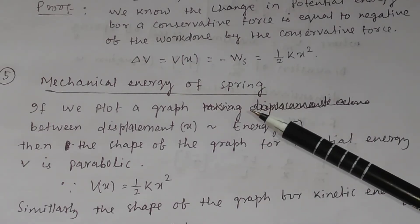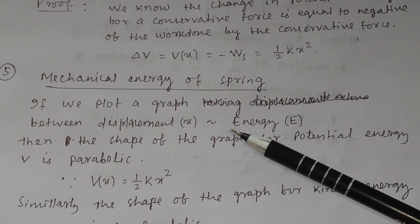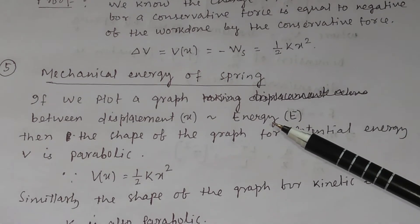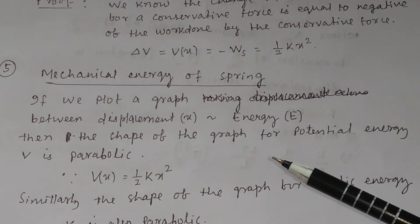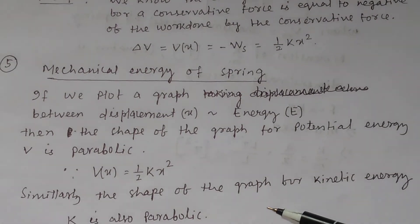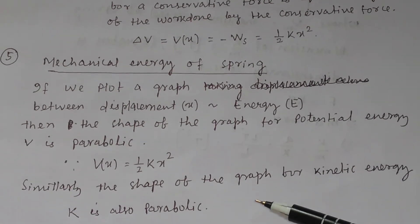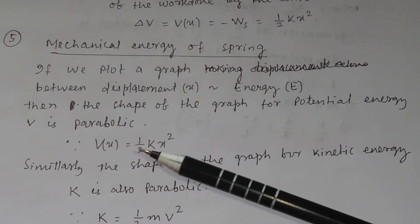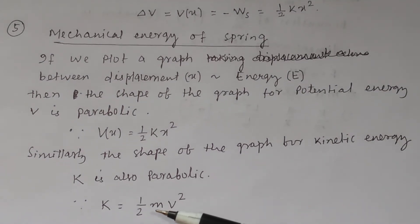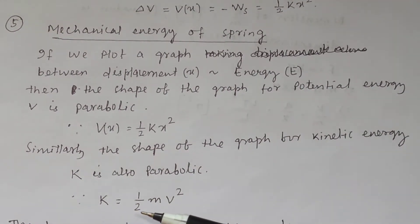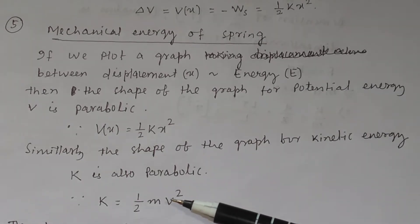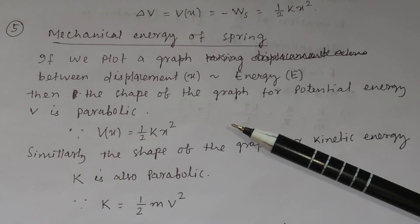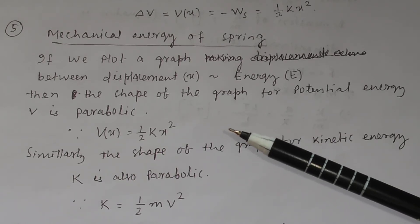Now let us discuss the mechanical energy of the spring. If we plot displacement versus energy, the shape of the graph for potential energy is parabolic, since PE = ½kx² is the equation of a parabola. Similarly, the kinetic energy KE = ½mv² also gives a parabolic graph. So for both potential energy and kinetic energy in a spring system, the graph shape is parabolic.